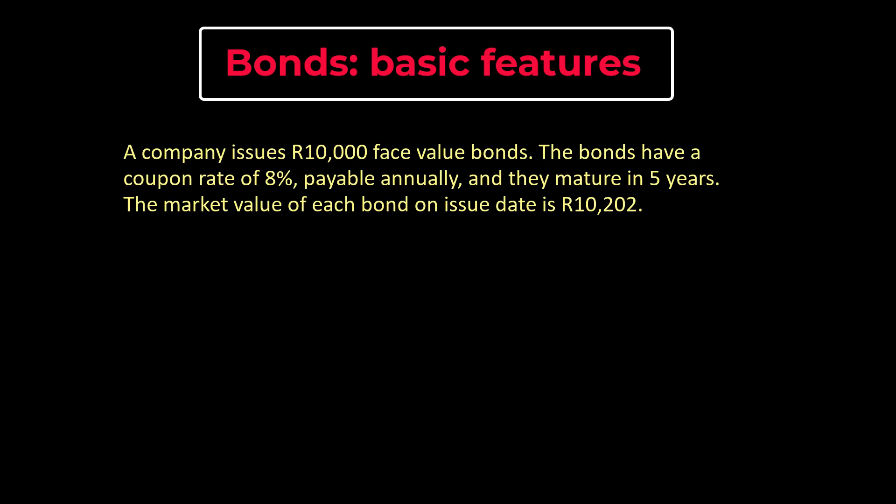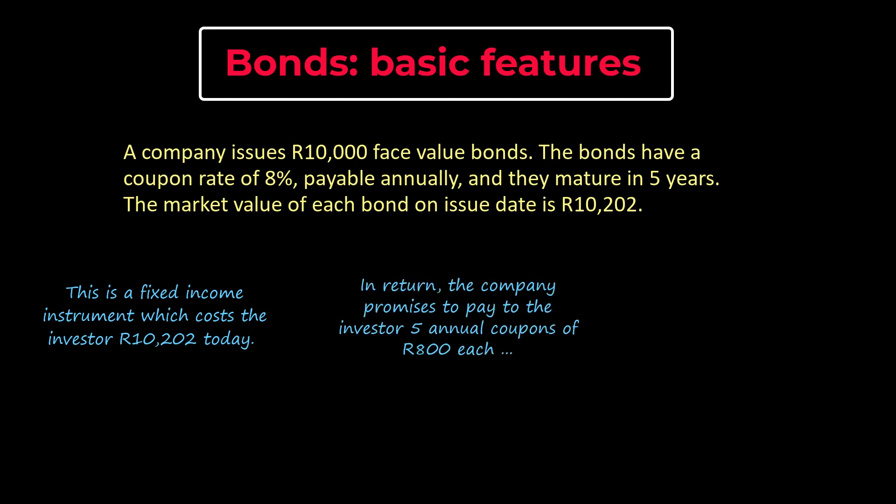This means that the investor pays the company R10,202 today for each bond. This is effectively a loan to the company by the investor. In return, the company promises to pay the investor 5 annual interest payments of R800 each. These are called coupons. The amount of each coupon is calculated as the coupon rate of 8% times the face value of R10,000.